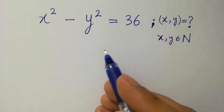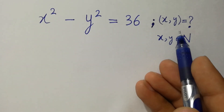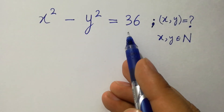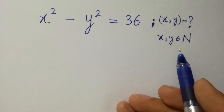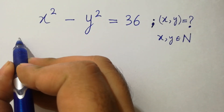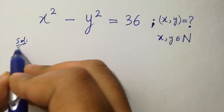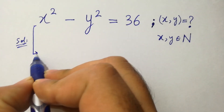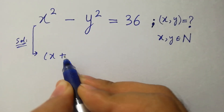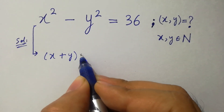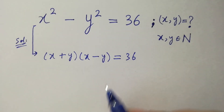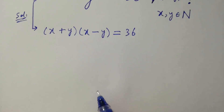Hello friends. Find the value of x and y if x squared minus y squared equals 36, where x and y belong to natural numbers. This problem is the same as x plus y times x minus y equals 36.